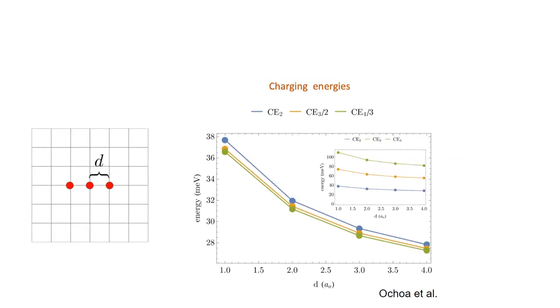One challenge that we're facing with the finite element method can be illustrated by this plot here that we use to calculate the charging energies of this phosphorus trimer system embedded in silicon, which we calculated with the finite element method. When we compare our results to experimental values, we see that we're almost twice underneath what the value is supposed to be.